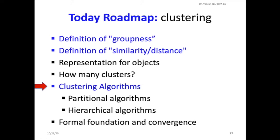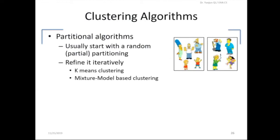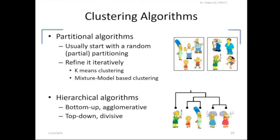Clustering methods can be roughly categorized into two groups. The first group is called partitional methods — you start with a random partitioning and then refine that partition iteratively. The most classic approach is k-means, and a more advanced extension is the Gaussian mixture model, which can be further expanded into more generic mixture model-based clustering. The other type is called hierarchical clustering, which builds a binary tree — called a dendrogram — to organize all the samples in your data.